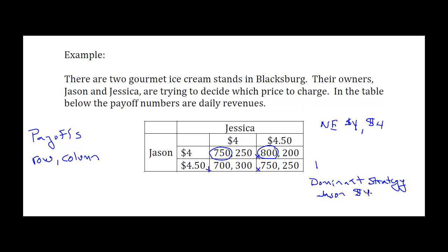Let's do the same analysis for Jessica. Jessica says to herself: if Jason's going to pick $4, then she would rather pick $4 because $250 is bigger than $200. Similarly, if Jason is going to pick $4.50, she would rather pick $4 because $300 is bigger than $250. So from Jessica's point of view, she would also rather pick $4.